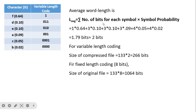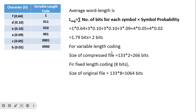The average word length formula is: sum of (number of bits × symbol probability). Calculation: 1×0.64 + 3×0.10 + 3×0.10 + 3×0.09 + 4×0.05 + 4×0.02 = 1.79 ≈ 2 bits. So the compressed file size is 133 × 2 = 266 bits. Without variable length coding, using fixed 8-bit encoding: 133 × 8 = 1064 bits. This demonstrates significant compression.